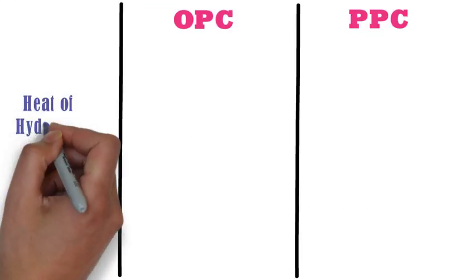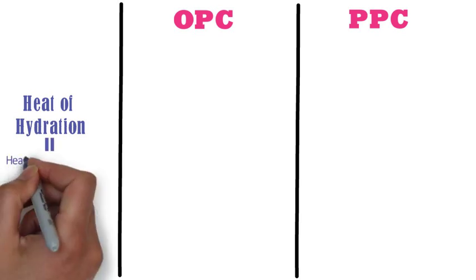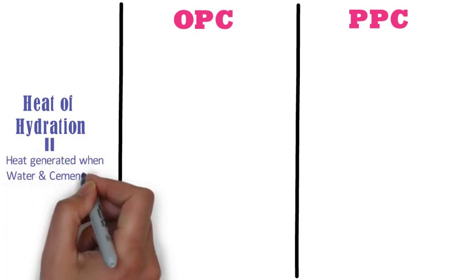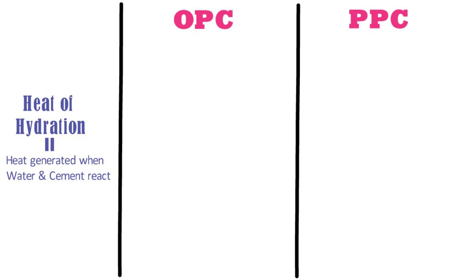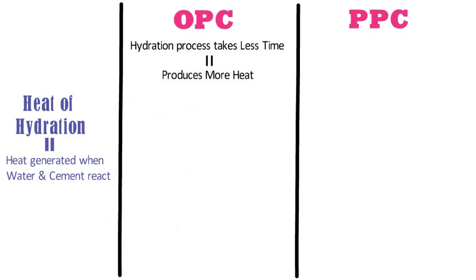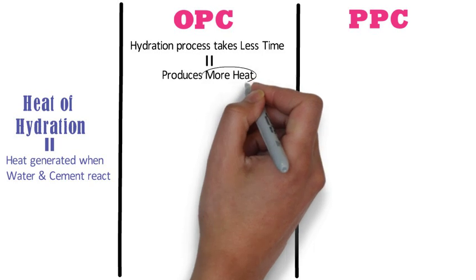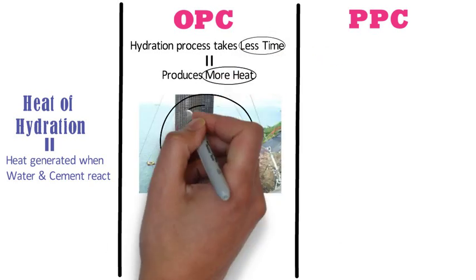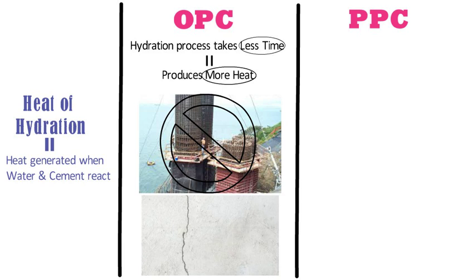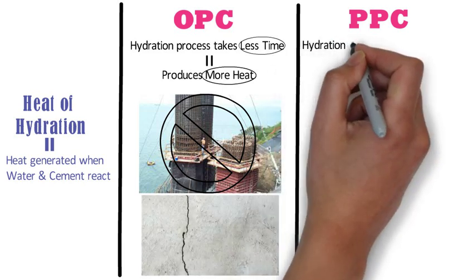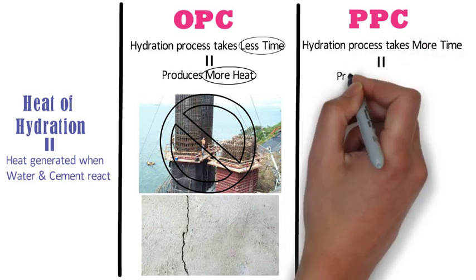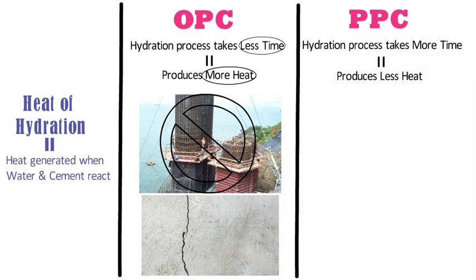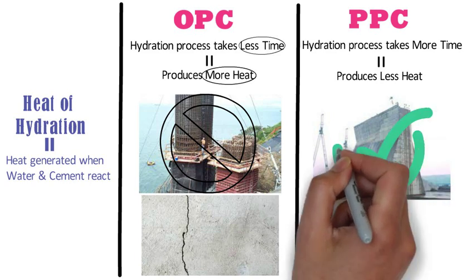Heat of hydration is the heat generated when water and cement react. In case of OPC, the hydration process takes less time for completion and produces more heat than PPC. Please note: if cement produces more heat in less time, it cannot be used for mass concreting as it may generate cracks in the structure. Whereas in case of PPC, the hydration process takes longer and produces less heat. Hence PPC is ideal for mass concreting.